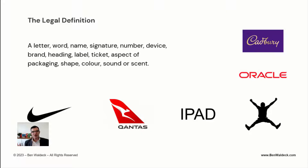It covers a broad range of items that can be registered. For instance, the Nike swoosh is a 'device.' The Qantas kangaroo on the tail fin is also a device. Because the Qantas name is stylized, provided Qantas owns the font, that stylized font can be registered as a trademark. A word can also be registered by itself — for example, 'iPad.' Oracle appears to have its own font, so that would be a registered trademark protecting both the word Oracle and that stylized font.